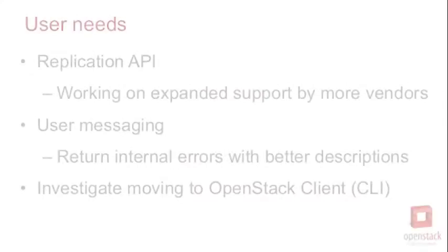Replication is a priority. We've had some development over the last couple of releases for replication and we have replication support, but it's not adopted by all vendors that are able to do replication. So one of our priorities is to expand that coverage. We have five or six backend vendors right now that support it, and we'd like to expand that to have it be more common functionality. I'd love to hear any feedback from end users about what they're looking for with replication so we can make sure we meet their use cases.